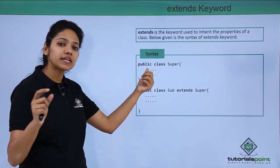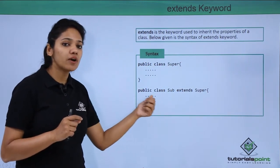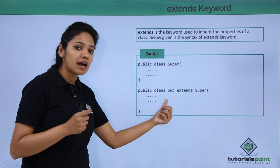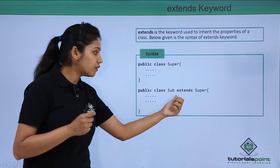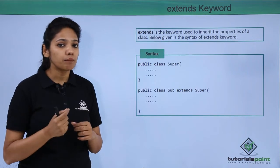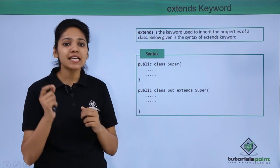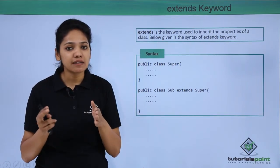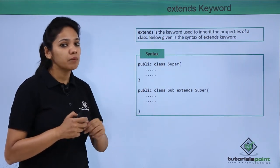In general, you first create a class called public class super and close it, then create your child class — the subclass — by writing public class followed by the subclass name and then the extends keyword. After the extends keyword you write the parent class from which you want to inherit the properties. One important note: if you are declaring the super class as a public class, both classes need to be defined in separate files; if not using public, you can define them under the same program.